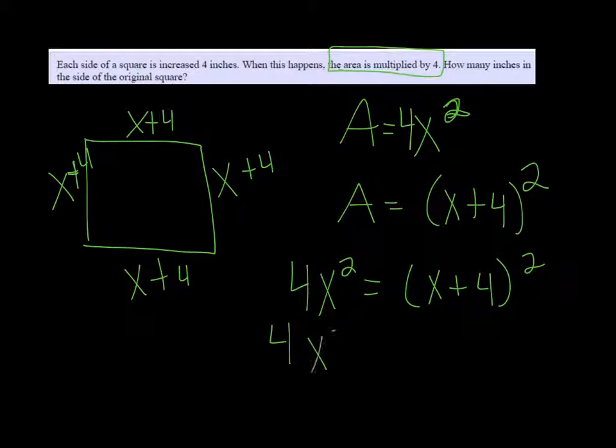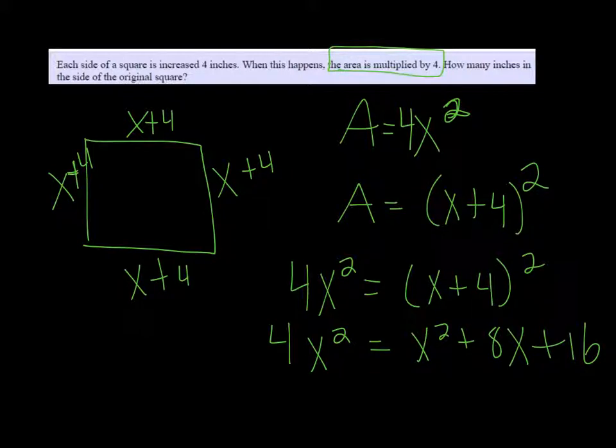And if we multiply out X plus 4 squared, we get X squared plus 8X plus 16. And we want everybody to be on the same side or one side equal to 0. So I'm going to subtract and get 3X squared minus 8X minus 16 equals 0.